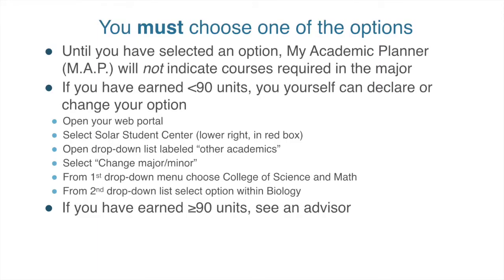You have to choose one of these options. Until you select an option, we can't plan out your degree. If you have earned fewer than 90 units, you can select the option or declare or change your major online by opening your web portal, selecting the solar student center in the lower right, then choosing the drop-down labeled 'other academics,' selecting 'change your major or minor,' then choosing College of Science and Math, and selecting an option within Biology. If you've earned 90 units or more, you can't change your major on your own and will need to see an advisor at the Biology Advisement Center.